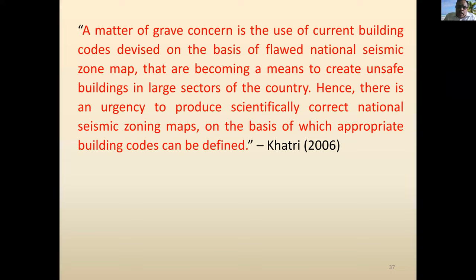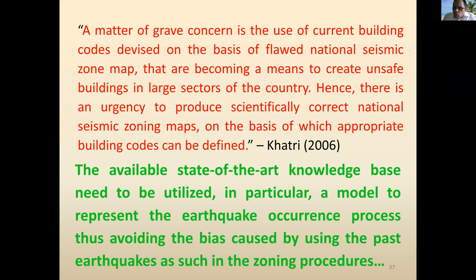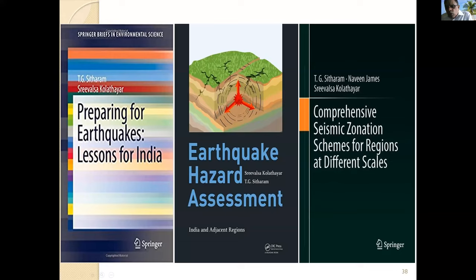There is now a large knowledge base available that we need to utilize. A model to represent the earthquake process should be adopted in the code to avoid bias caused by using past earthquake data alone for zoning. Our group has published extensively on seismic zonation schemes for regions of different scales — macro, micro, and city level — for cities like Bangalore and Lucknow, and has been involved in the NCR region. A large amount of work and knowledge is available, and bringing that wisdom together into codal practice is the key. Implementation is the next critical step.